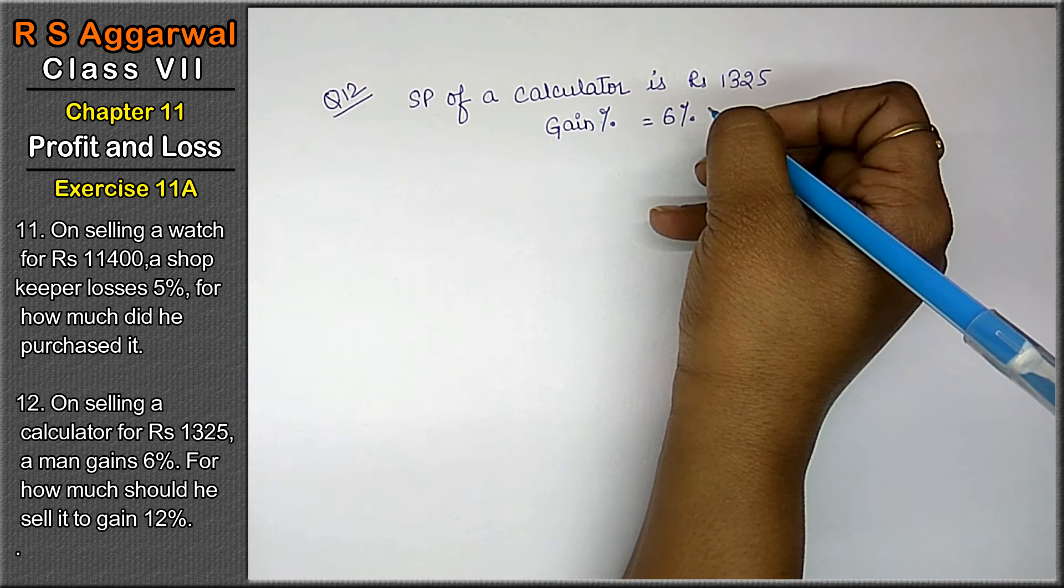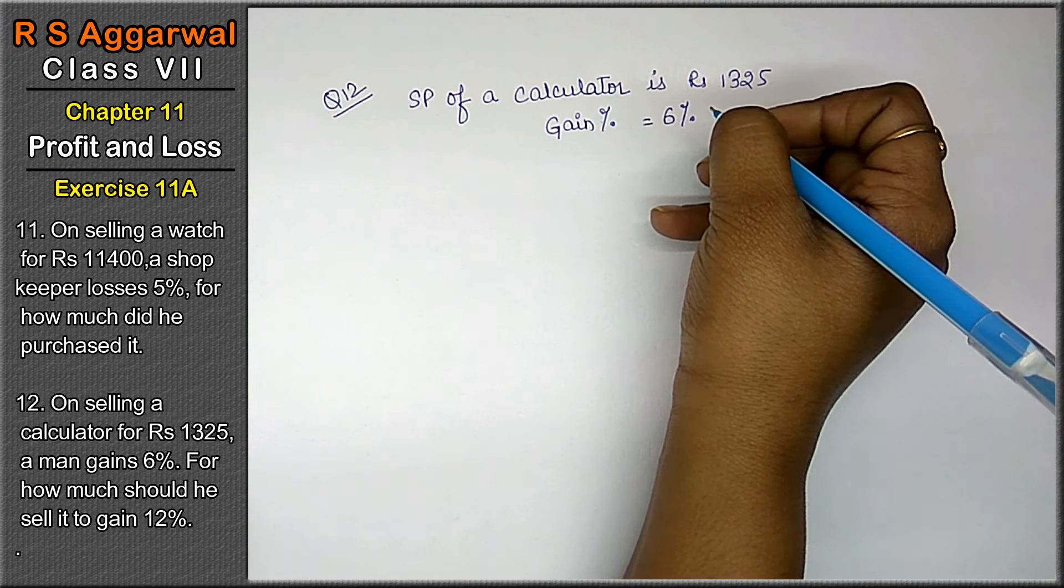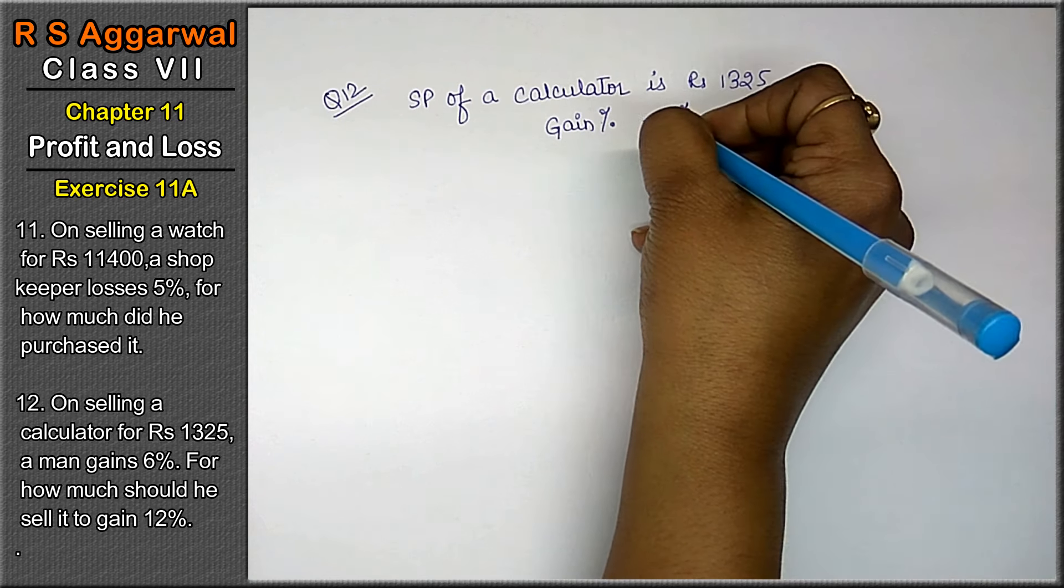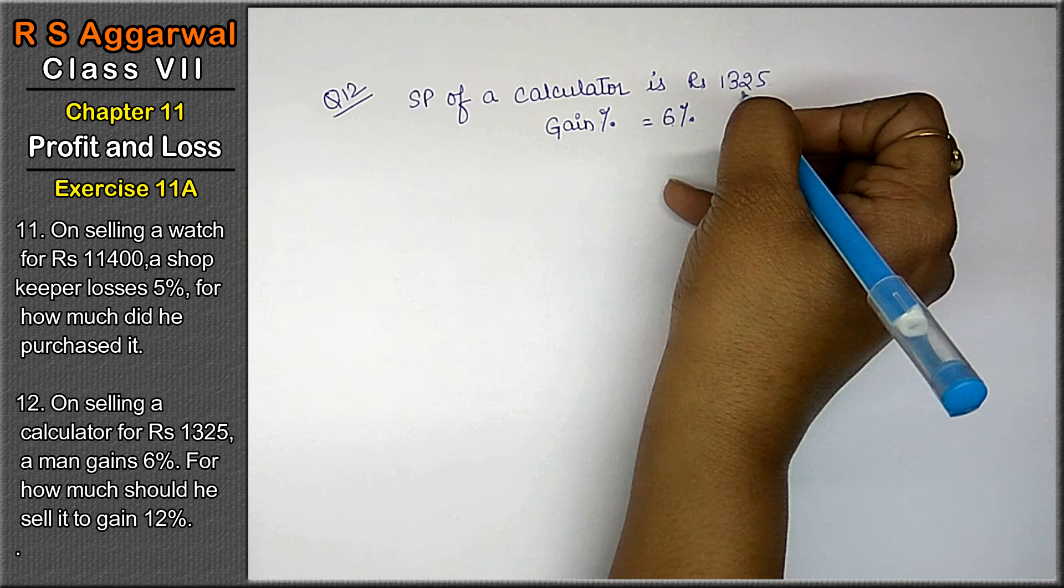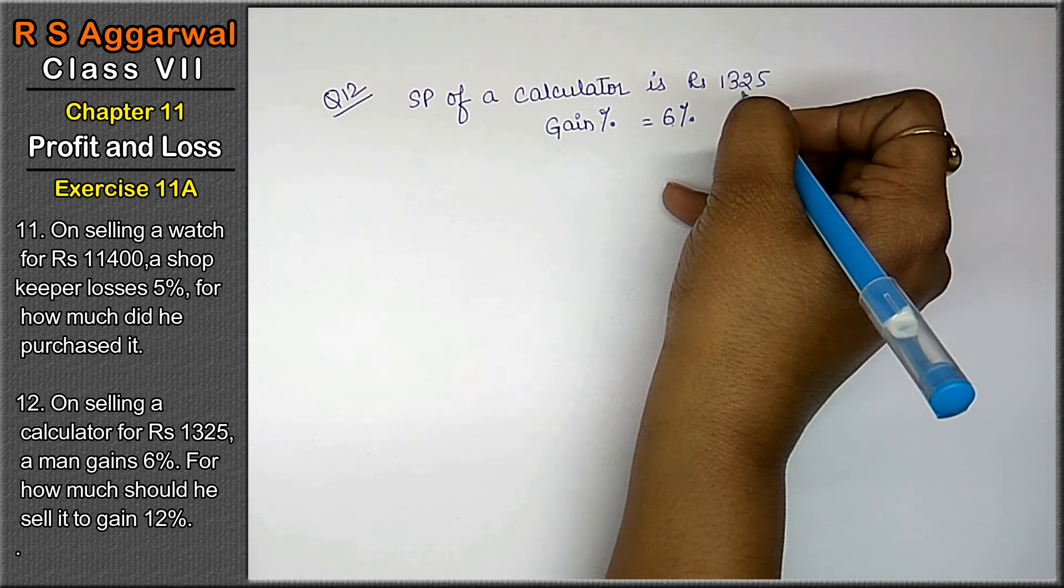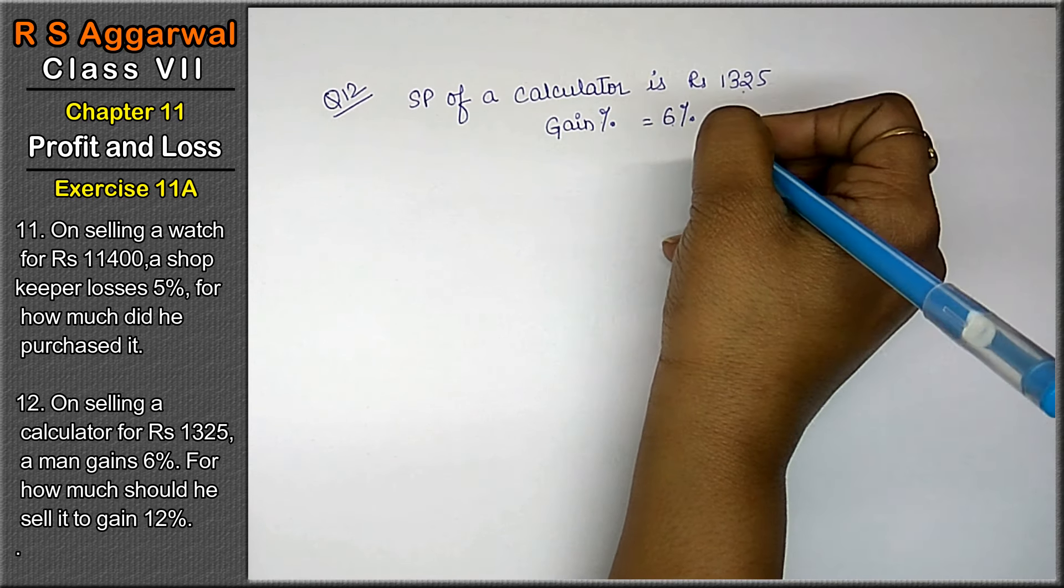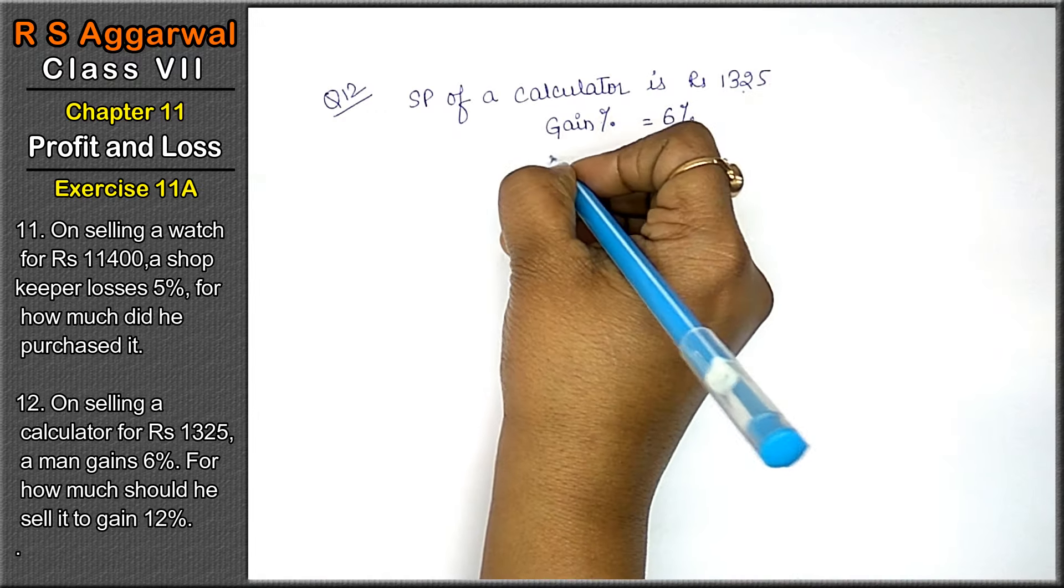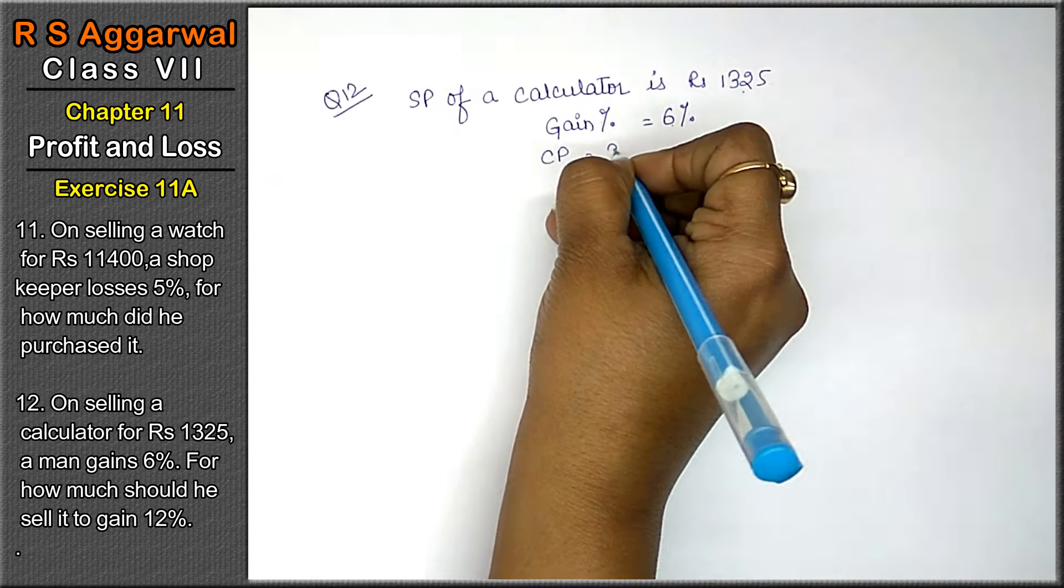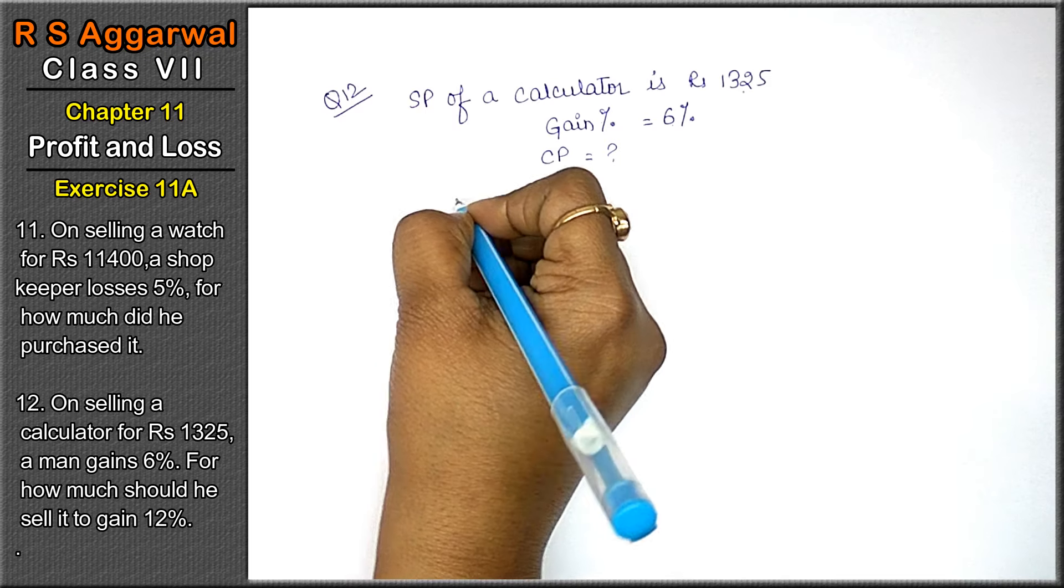For how much should he sell it to gain 12 percent? If he is gaining 6 percent, that's the selling price he's getting by selling the calculator. If he gains 12 percent, what will be the selling price? We have to find that out. First, we'll find the cost price. The formula is: SP = (100 plus gain percent) upon 100 into CP.